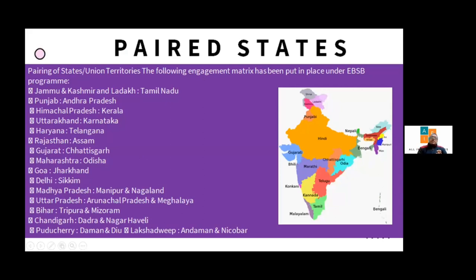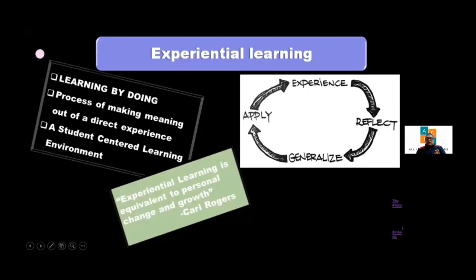Regarding the pairing of states — Jammu & Kashmir with Tamil Nadu, and so on — you cannot choose your pair; CBSE has already set it. For example, Delhi is paired with Sikkim. Every state is paired with another, and the advantage is that we understand the rich culture of our country. This circular is already available. Learning by doing and experiential learning will make our learning very meaningful.